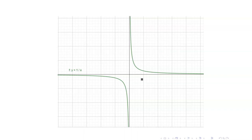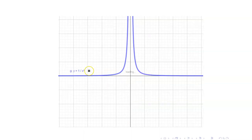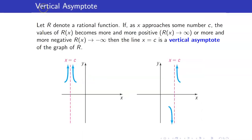Here are the graphs of some examples of rational functions. This is the graph of the function 1 over x. This is the graph of the function 1 over x squared. In order to discuss the behavior of the graphs of rational functions, we have to discuss asymptotes. First, let us start with vertical asymptotes.